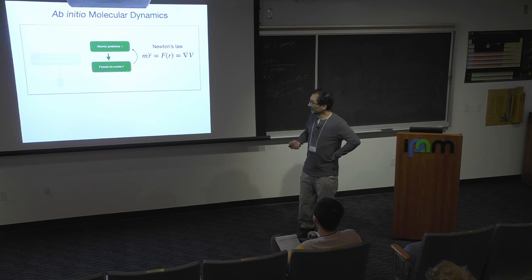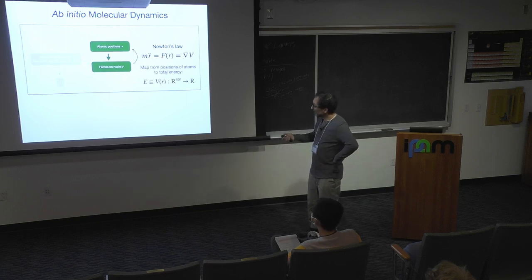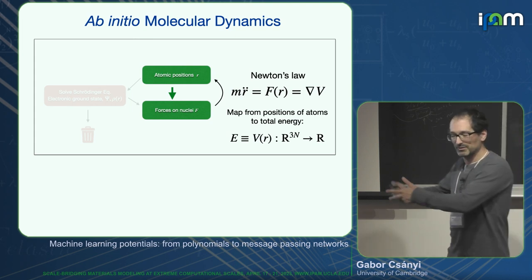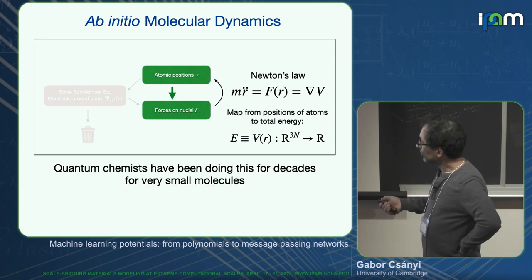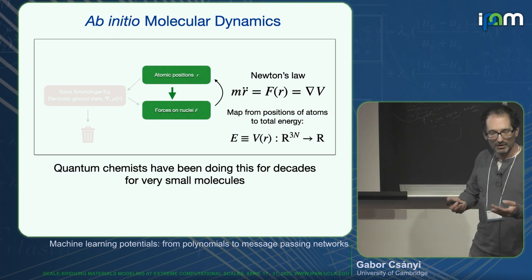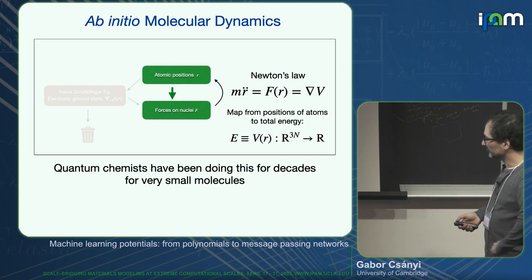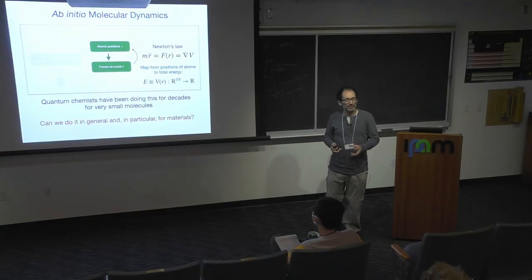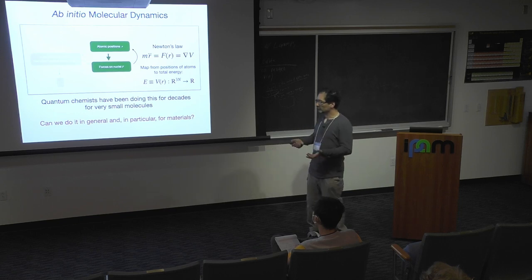The idea of multi-scale modeling and first principles is that we should be able to go from positions to forces directly, without computing things that in the end we don't use. What we want is to compute a V(R) — a potential energy as a mapping from the 3N positions of atoms to a scalar — and then take the gradient and run usual molecular dynamics. This idea is not new; quantum chemists have been doing this for decades for small molecule vibrational studies. The real question is: can this be done in general for material systems, periodic systems, large systems, rather than just five atoms?